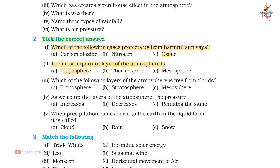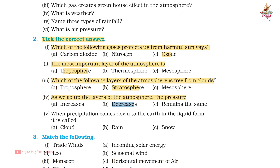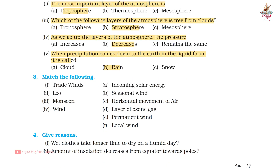Third, which of the following layers of the atmosphere is free from clouds? Answer: b. Stratosphere. Fourth, as we go up the layers of the atmosphere, the pressure? Answer: b. Decreases. Fifth, when precipitation comes down to the earth in liquid form, it is called? Answer: b. Rain.